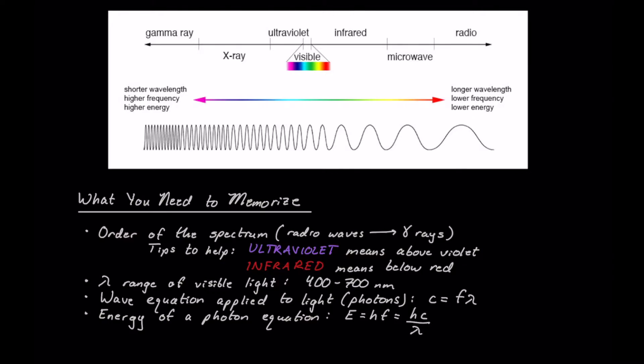First things first, we need to know what we need to memorize for test day, which is half the battle with the MCAT. First thing we need to memorize is actually the order of the spectrum. I recommend you memorize it radio waves to gamma rays.